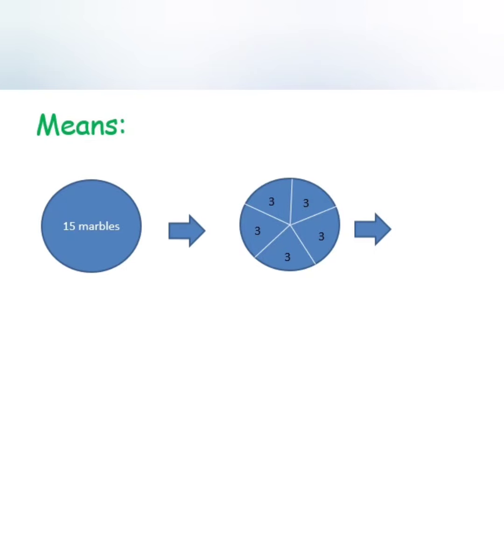As the numerator that we have is 2, it means that from 5 parts of this circle, we only tag 2 parts of it. So the 2 parts is equal with 6 marbles.